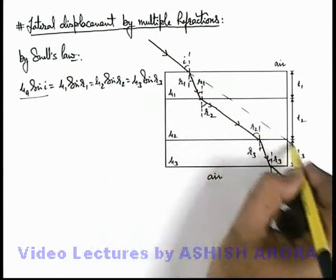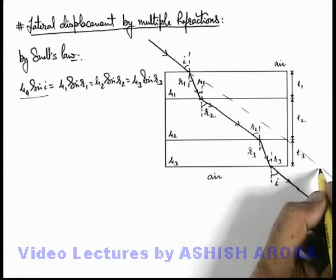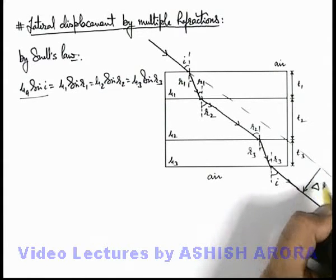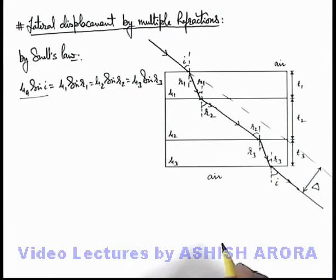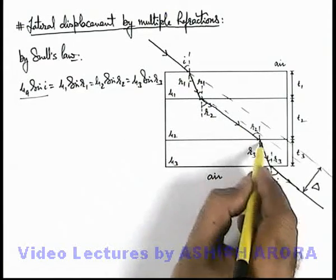That means finally the light is going in the same direction where the incident ray was traveling, and it is displaced laterally by the lateral displacement Δ. But in this situation, the lateral displacement due to all three refraction at the three slabs would be different.